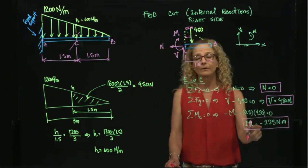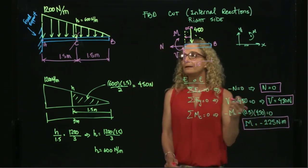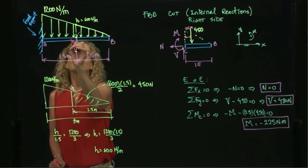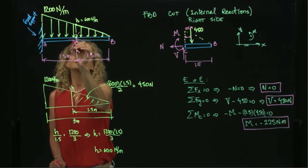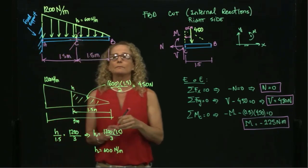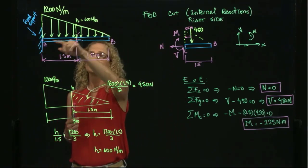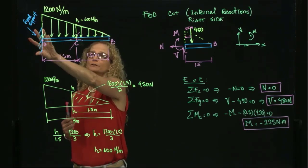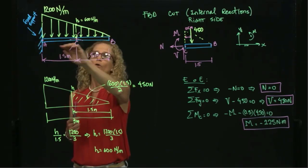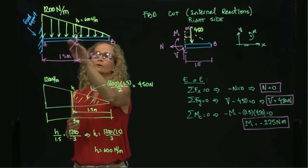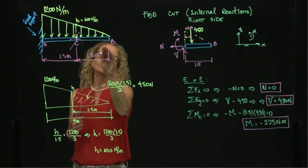Having a negative moment means that at this point, my beam is concave down. That makes sense because I am applying a force to a cantilever beam which is fixed, directed downward, so my beam will deform and take this shape.